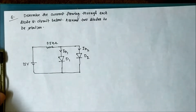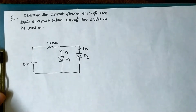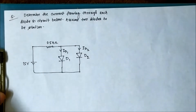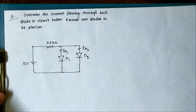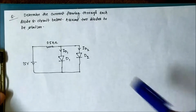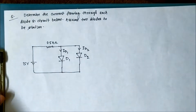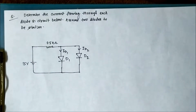This is another question related to p-n junction diodes connected in circuits. In the given question, there are two diodes D1 and D2 connected across a 15 volt voltage source and a 0.5 kilo ohm resistance. The two diodes are similar in characteristics — they are identical — and we have to calculate the current ID1 and ID2 flowing through diodes D1 and D2.